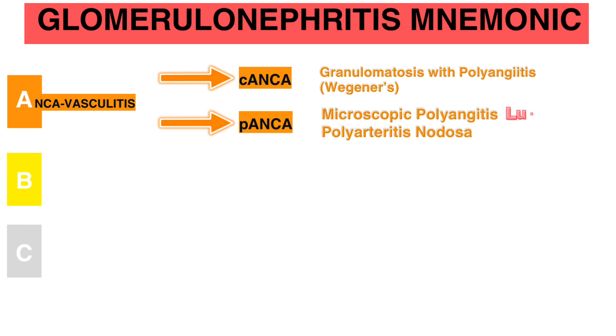Microscopic polyangiitis typically involves the lungs — for example, pulmonary hemorrhage. Polyarteritis nodosa usually spares the lungs.